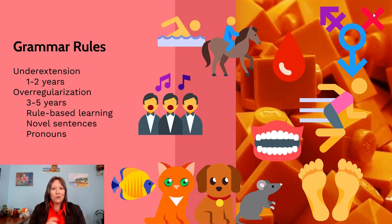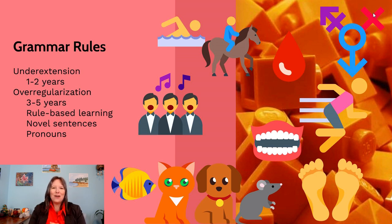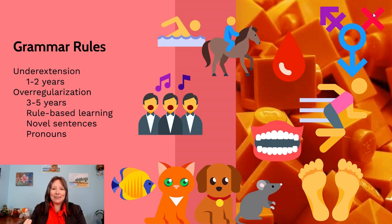A child might learn 'one cat, two cats' and then say 'one fish, two fishes' or 'one mouse, two mouses,' even though we say 'fish' and 'mice.' Common examples include 'one foot, two foots' instead of 'feet,' or 'one tooth, two tooths' instead of 'teeth.' With verbs, a child might say 'I swimmed,' 'I singed,' 'I bleeded,' or 'I runned.'